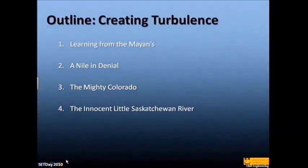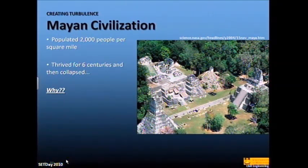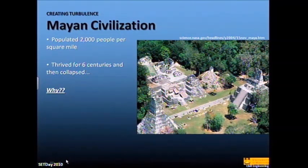Creating turbulence. We already heard about the Mayan example. At the peak of that civilization there were about 2,000 people per square mile — equivalent to Los Angeles County today. That's a pretty dense population for a really ancient civilization. For six centuries this civilization thrived, and then all of a sudden, anthropologically, one day in history it died off.